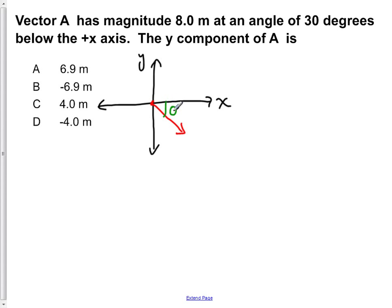So this is our angle here, theta. Theta is equal to 30 degrees. We now want to know what the y component is. So here's Ax, here's Ay, here's A.